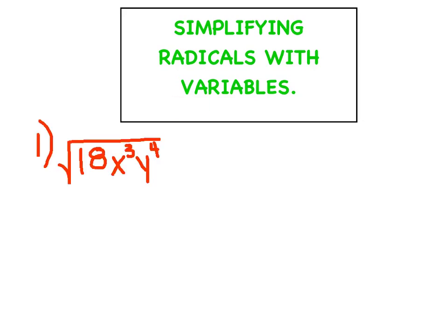Example number 1: the square root of 18x cubed y to the 4th. If I just said the square root of 18, most people would be pretty good at that. They'd say I need a perfect square and not a perfect square. So we're going to do something very similar. We're going to start with the 18 and say the two numbers that multiply to 18 are 9 and 2. 9 is the perfect square and 2 is not.